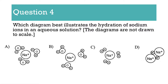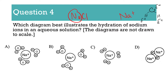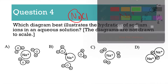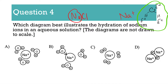Number four: which diagram best illustrates the hydration of sodium ions in an aqueous solution? Basically, it's just saying, if you were to put salt into water, how does it react? Remember, sodium is positive. When you're drawing your water, oxygen is a little bit negative, H is a little bit positive. The ion will break apart such that we have Na+, and the oxygen is going to want to point its way towards sodium. Remember, opposites attract. So oxygen is partially negative, hydrogen is partially positive — therefore the answer is E.